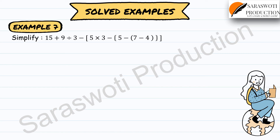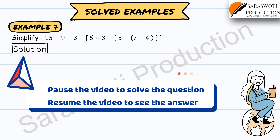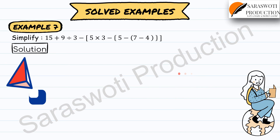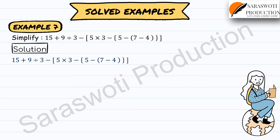Practice problem: Simplify 15 plus 9 ÷ 3 minus [5 × 3 minus {5 minus (7 minus 4)}]. First simplify the innermost simple bracket: 7 minus 4 equals 3, giving 15 plus 9 ÷ 3 minus [5 × 3 minus {5 minus 3}].